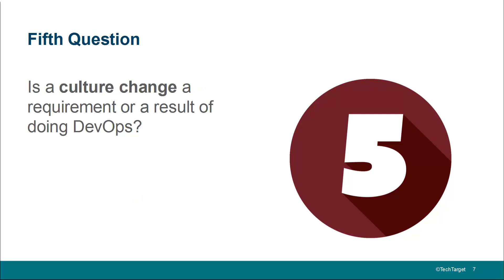Number five is a bit of an opinion piece: do you think a culture change is a requirement or a result of doing DevOps? The correct answer is that it's a result. A culture is defined by the processes and practices you use. What happens in DevOps is you start introducing new tools — people use Jenkins, distributed development, containers. Because they start using containers, the processes they go through and the behavior they have changes. And in the end, you end up having a culture change. So it ends up being a result — it's not the input. You don't say we've got to change our culture and then we'll do DevOps. You start doing DevOps, and eventually the culture changes, especially if you're doing DevOps right.